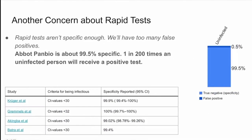Another concern is that they're not specific enough. By specific enough, we mean that even if you don't have COVID-19, you might still end up with a positive rapid antigen test result. That's because potentially there's something similar enough to a COVID-19 virus in the sample — but not a COVID-19 virus — that would still trigger a positive result.